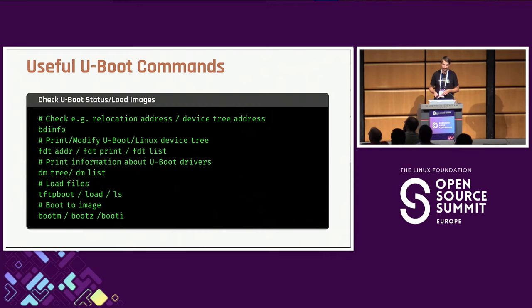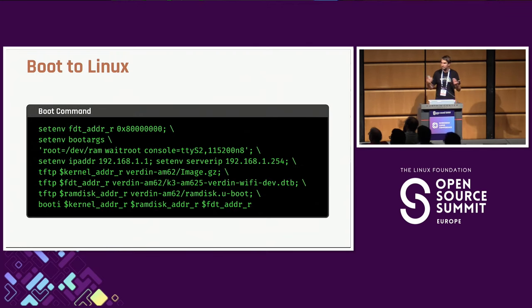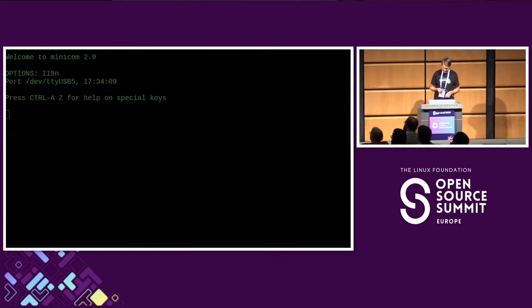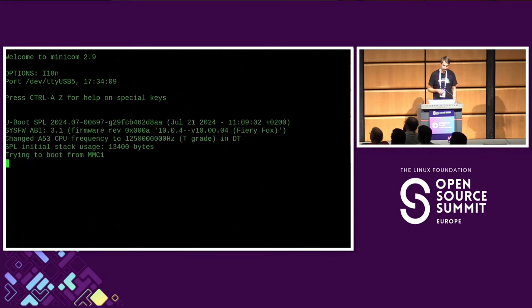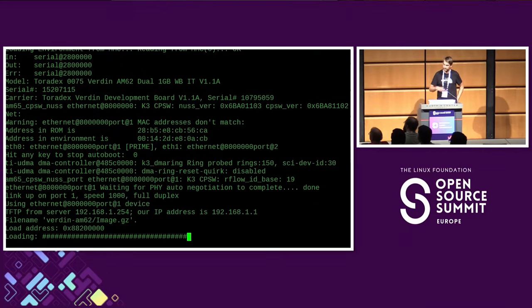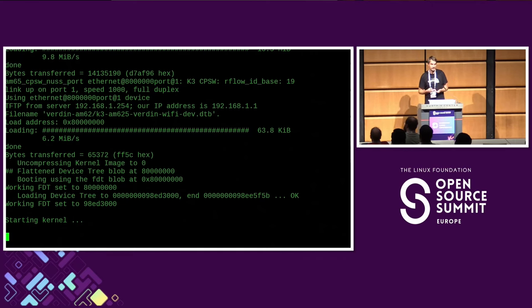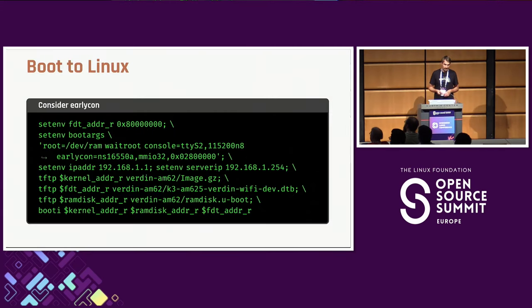Now that we're in U-Boot, we want to boot Linux. Here is the boot command — we boot from TFTP and store that command in U-Boot so it runs automatically on power-on. U-Boot starts, fetches from TFTP, and then we see 'Starting the kernel' as the last message. That message is still from U-Boot, meaning either the kernel didn't load correctly or something went wrong when it should start.